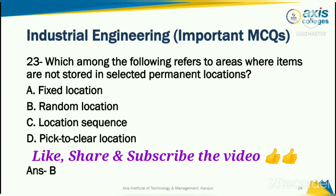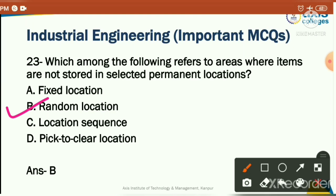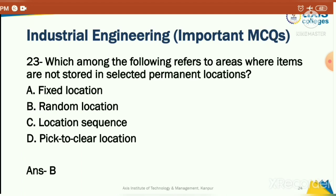Which among the following refers to areas where items are not stored in selected permanent locations? Options: fixed location, random location, location sequence, or pick-to-clear location. The correct answer is option B: random location — in random location, the product location is not permanently fixed.